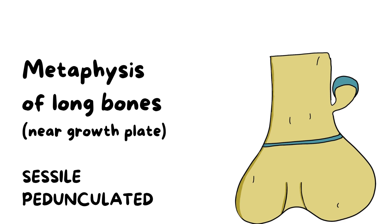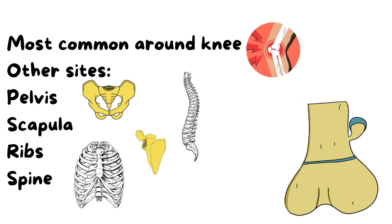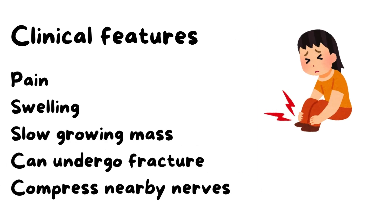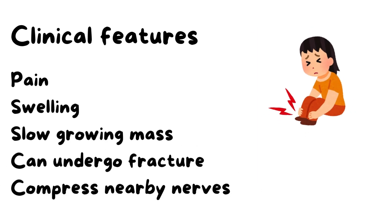The most common site of osteochondroma is around the knee — that is, the distal femur and proximal tibia. Other common sites are the proximal femur and proximal humerus. Less common sites include the pelvis, scapula, ribs, and spine. If osteochondromas are present in these less common sites, the risk of malignant transformation is greater compared to when they are present in the long bones.